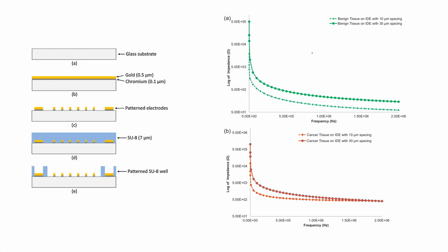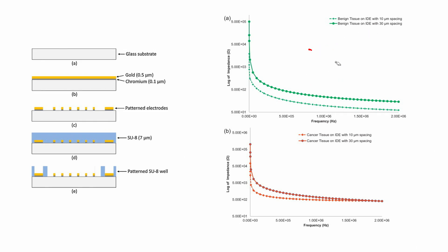Both mechanical properties — elasticity — and electrical properties — impedance — can be used to distinguish normal or benign from cancerous tissues. To fabricate such interdigital electrodes, you take a glass substrate and deposit a gold film. You need chromium as a base material because chromium helps with better adhesion of gold. After chrome-gold deposition, you pattern the electrodes with photolithography.